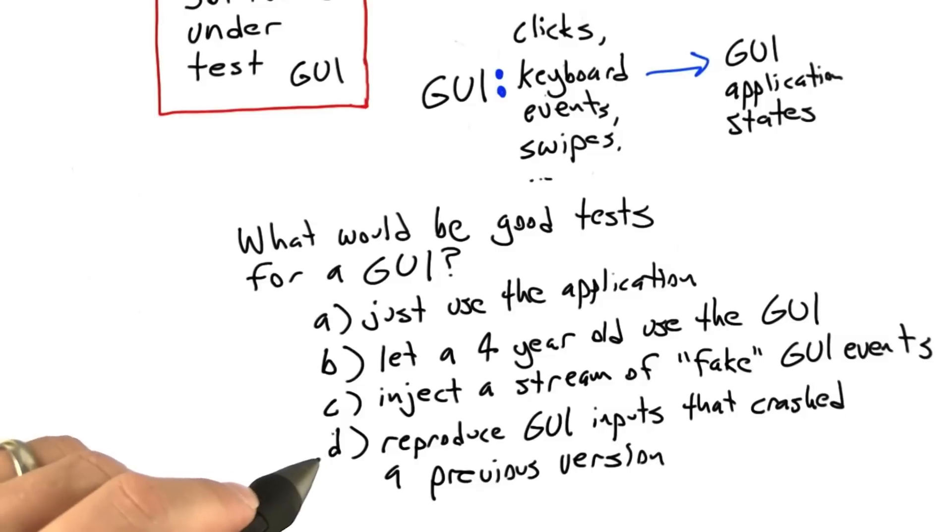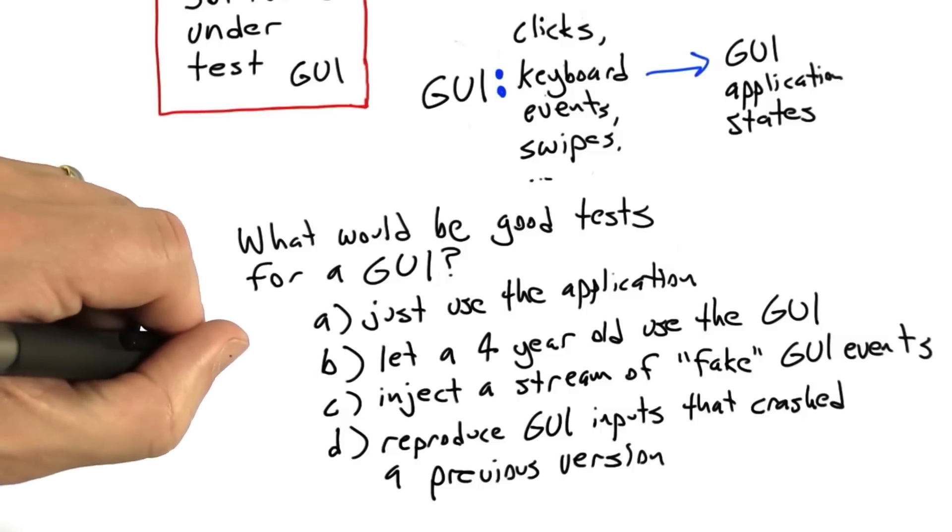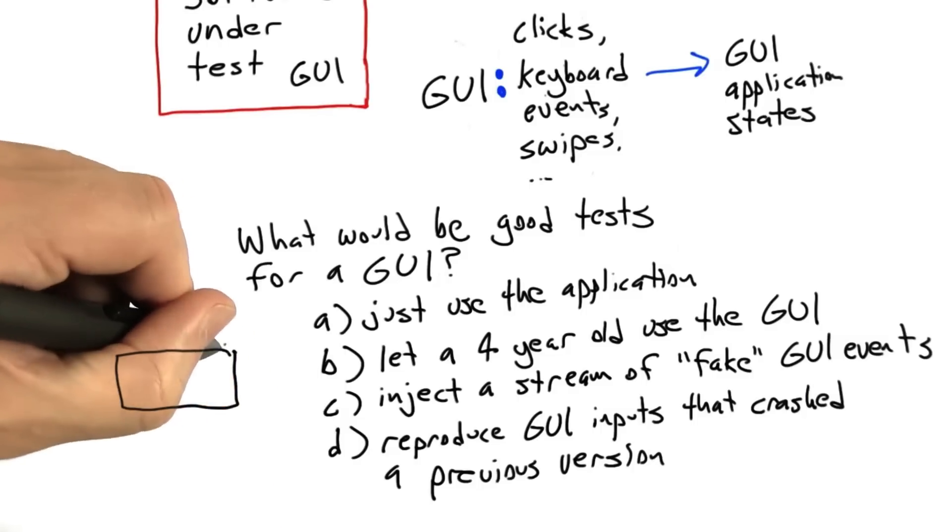And answer D is, reproduce GUI inputs, that is to say, mouse clicks and such, that crashed a previous version of our software. So go ahead and write all of the answers that apply in the text box here.